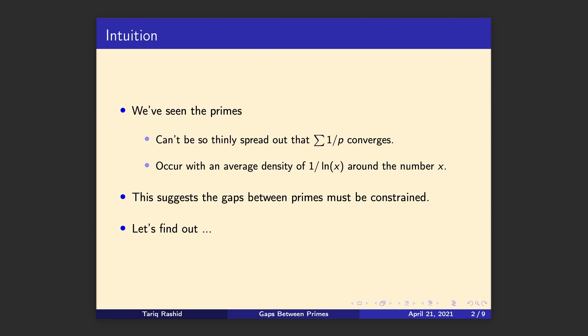So let's set the context. In the previous videos we've seen that the primes can't be really thinly spread out because the sum of the inverse primes converges. If they were very thinly spread out like the square numbers then that sum would converge. The second thing is that we've also seen that the density of the primes is 1 over log x and that leads into the prime number theorem.